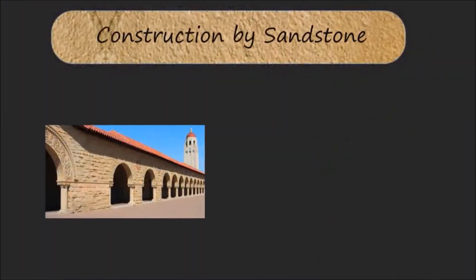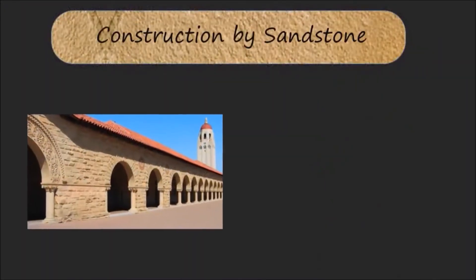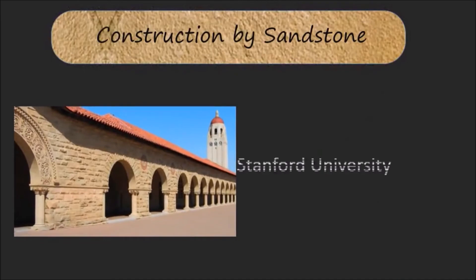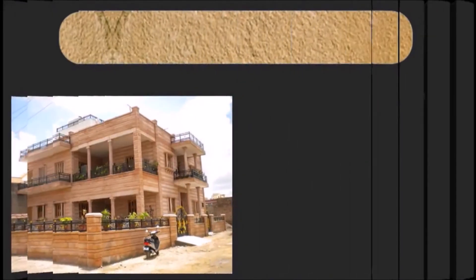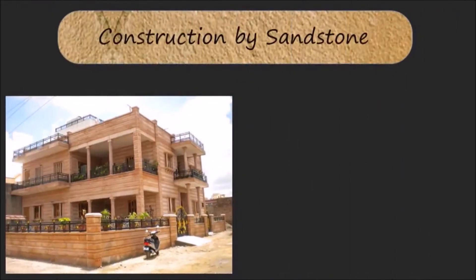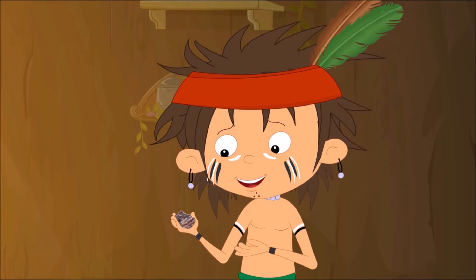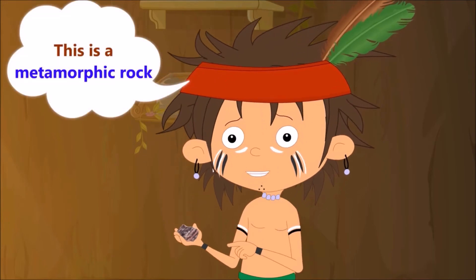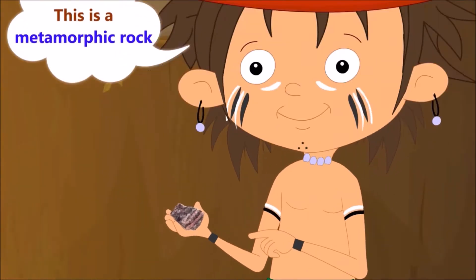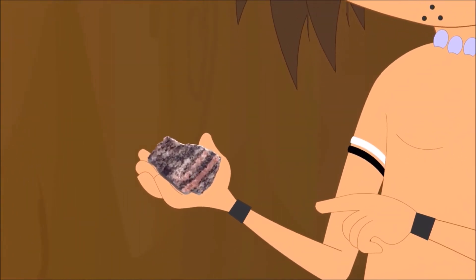Some construction examples using sandstone include Stanford University and a house in Mandur, Jodhpur. Now moving on to the third type of rock: metamorphic rock.